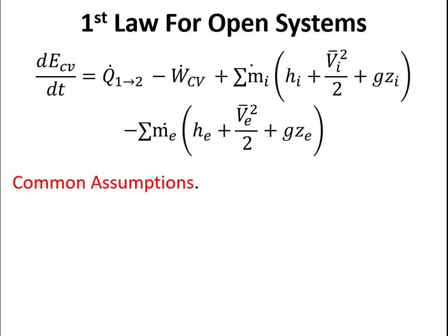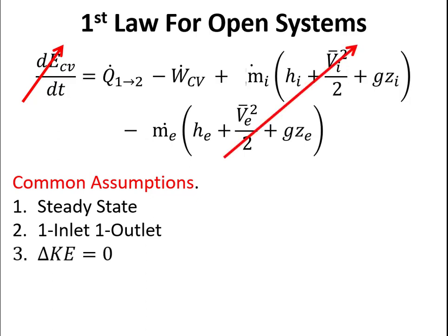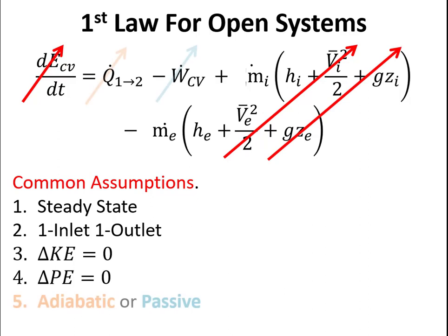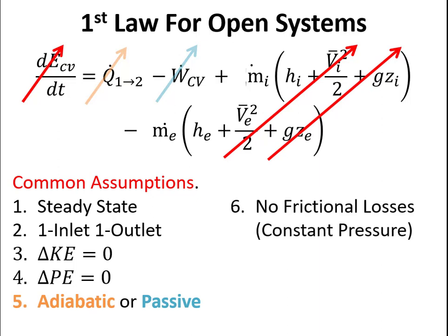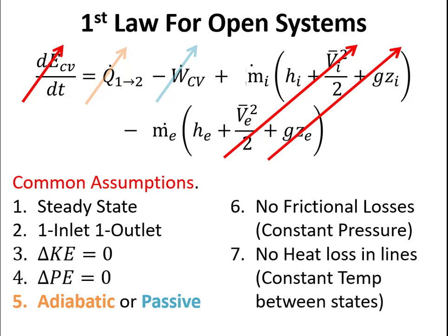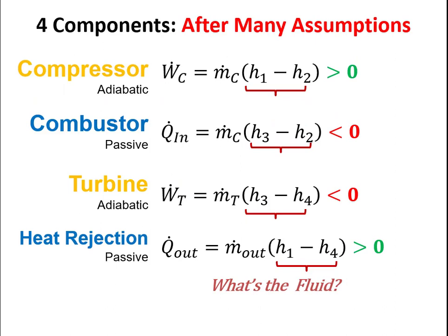Like a Rankine cycle, we'll use the open system version of the first law. For all components we'll assume steady state, one inlet and one outlet, and we can neglect changes in kinetic and potential energy. For each component we'll choose whether it's adiabatic or passive, and we'll assume no friction or heat losses in the lines. This gives us familiar equations: for power, w-dot over m-dot equals h-in minus h-out, and for heat transfer, q-dot over m-dot equals h-out minus h-in.